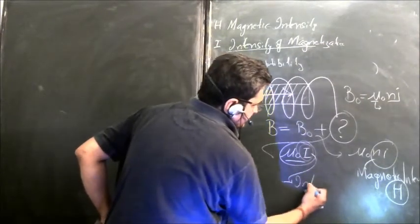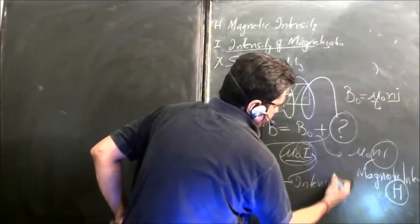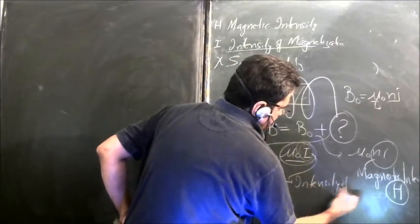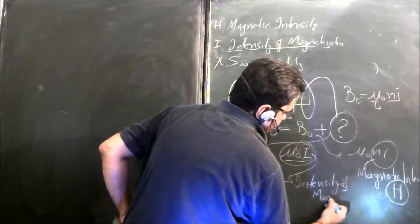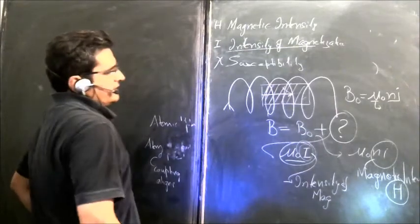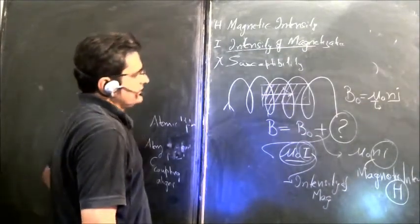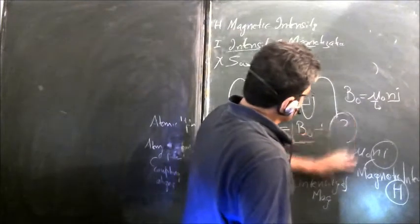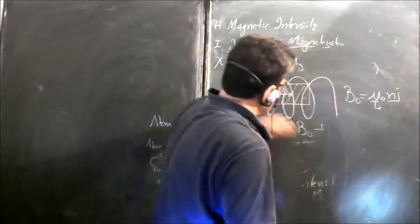Let us now write their equation in proper manner. B would be equal to B0, which is mu_0 times H. This is H, that is magnetic intensity.